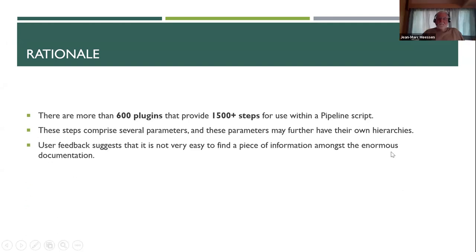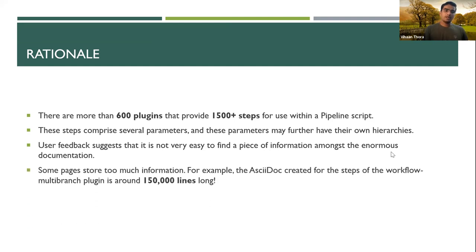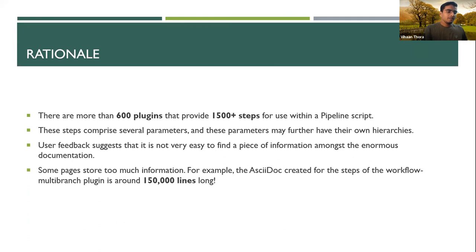There has been a lot of user feedback about this page suggesting it's not very easy to find a particular piece of information. For instance, if we look at the Pipeline multi-branch plugin page and look at the AsciiDoc for that, it comes out to be around 150,000 lines long. That is not good for the developer or the user — both will find it very hard to deal with it. Even the loading speed of the page becomes quite low. While we were finding solutions for these, we also came up with some additional improvements that were not initially part of the problem statement but could be beneficial for the website.